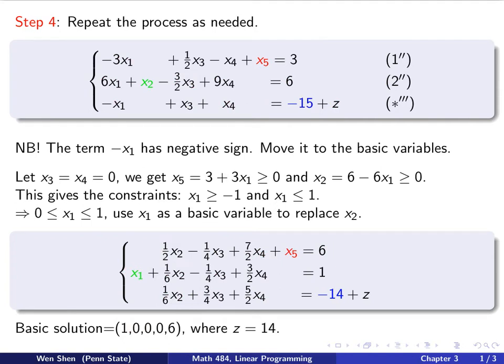And what's the value of z? Well, it's the negative of this one, because the left-hand side is 0. So z is 14. Now we see that by moving from this canonical form with its basic solution to the basic solution of this one, we reduced the z value further by 1.